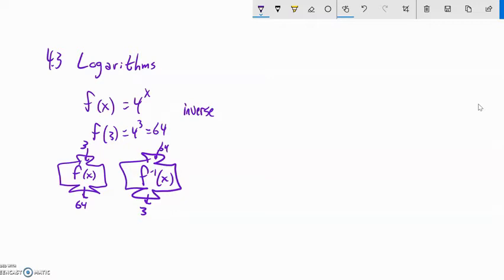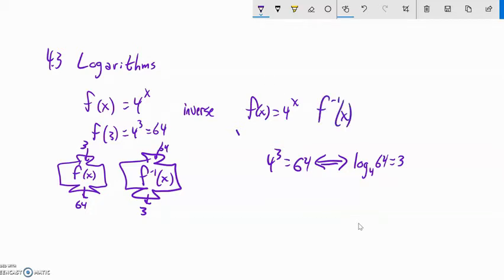This f inverse is going to be a logarithm, so if f(x) is 4^x, in other words, 4 to the 3rd power is 64, specifically. The logarithm statement of that, which is equivalent, is log base 4. Notice my base is 4, and then my input and output switch. So log base 4 of 64 is 3. That's what logarithms do. So the inverse of 4 to the x is log base 4 of x. It just has the same base.